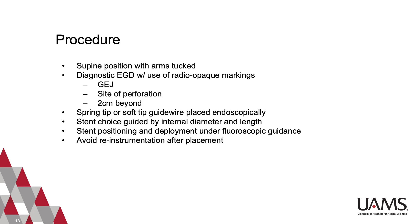We recommend the patient be positioned supine with the arms tucked to the side to allow for C-arm movement. The procedure should begin with a diagnostic EGD, noting the size of the lesion, diameter, and location in the esophagus. Radiopaque markers are then used to note the gastroesophageal junction, the site of the perforation or lesion, and 2 centimeters distal to the lesion to allow for precise stent placement. A spring tip or soft tip guide wire is then placed endoscopically and positioned distal to the lesion. Choice of stent is guided by the internal diameter and length and should be slightly larger than the lesion to provide adequate radial force.